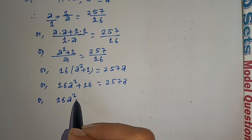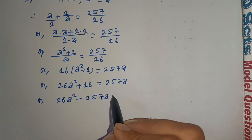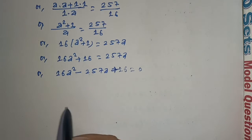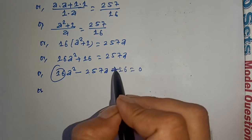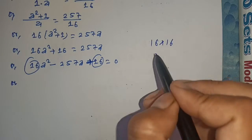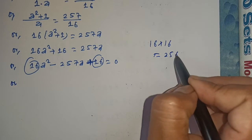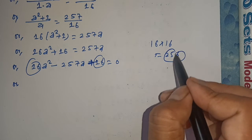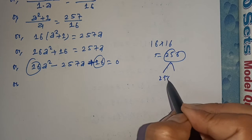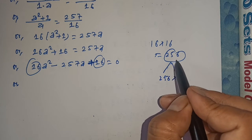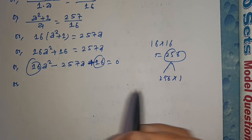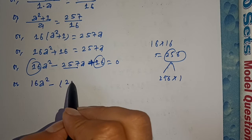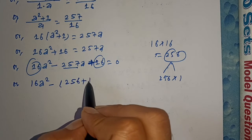Now solving 16a squared minus 257a plus 16 equals zero. We note 16 into 16 equals 256, and 256 plus 1 equals 257. So 16a squared minus 256a minus a plus 16 equals zero. Factoring: 16a times a minus 16 minus 1 times a minus 16 equals zero. That gives us a minus 16 times 16a minus 1 equals zero.